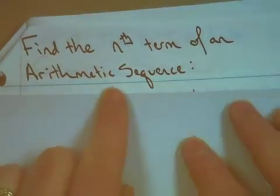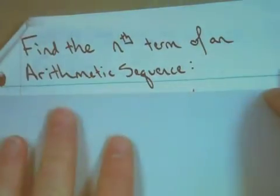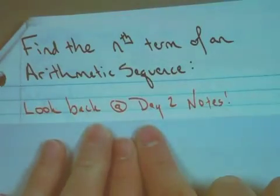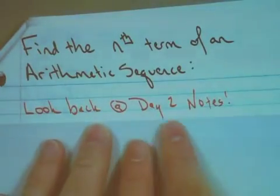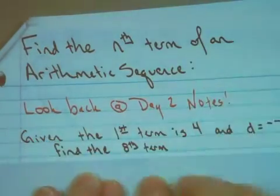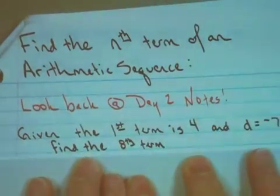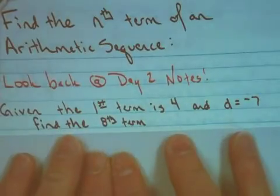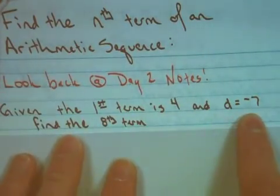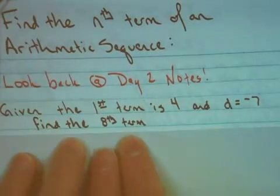We are going to find the nth term of an arithmetic sequence. That means you may need to go back and look at the video that has the day 2 notes in it. So if I tell you that my first term is 4 and that the common difference is negative 7, I want you to find the 8th term.